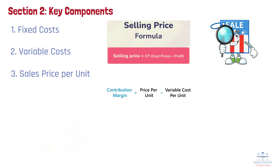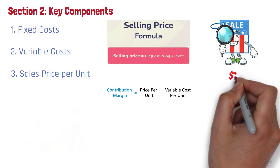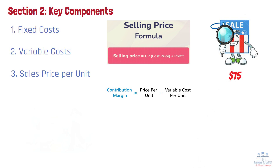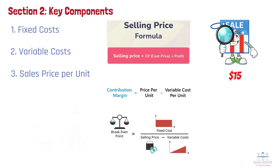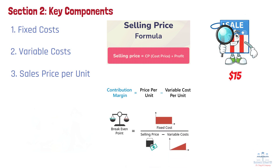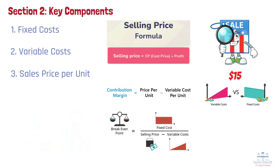For example, if EcoCup sells each cup for $15, this figure becomes part of the break-even equation. The relationship between the sales price and variable cost helps determine how many units must be sold to cover both fixed and variable costs.